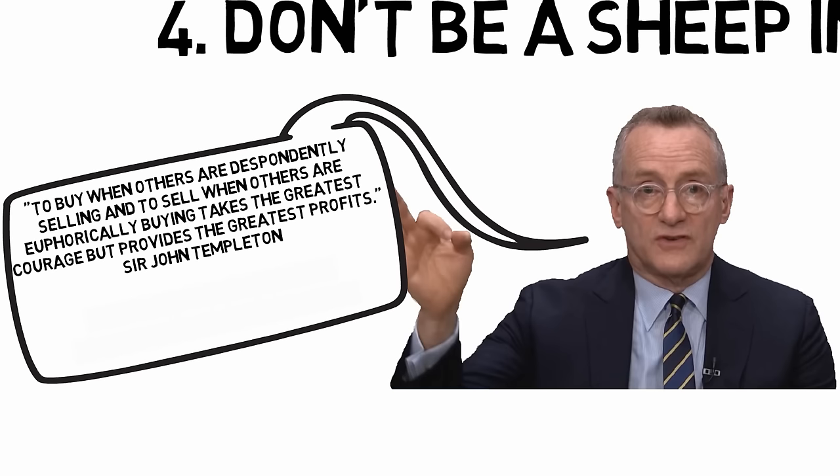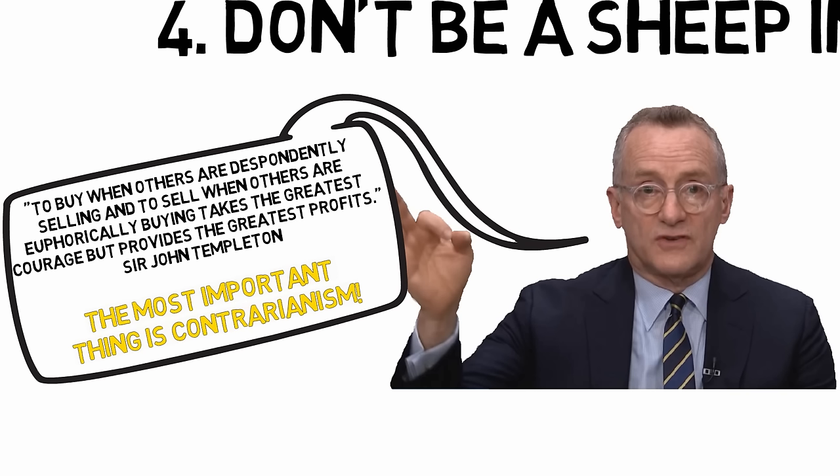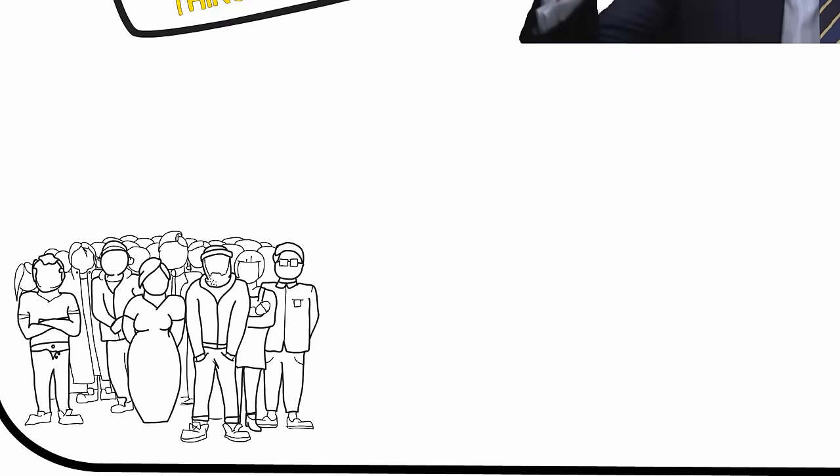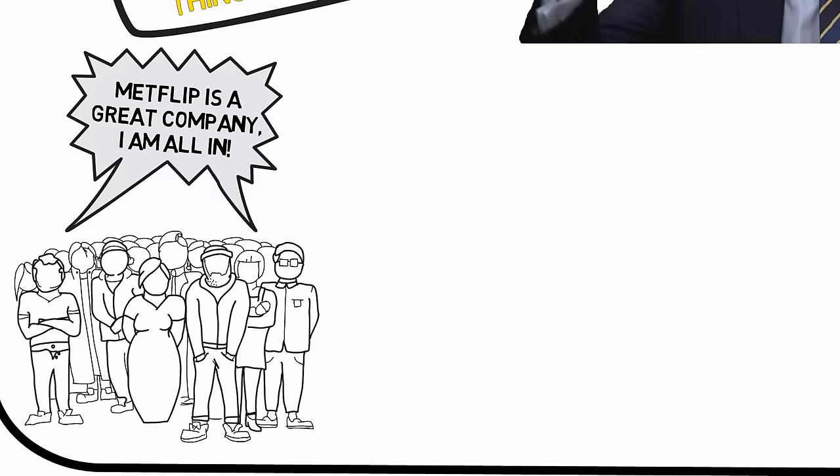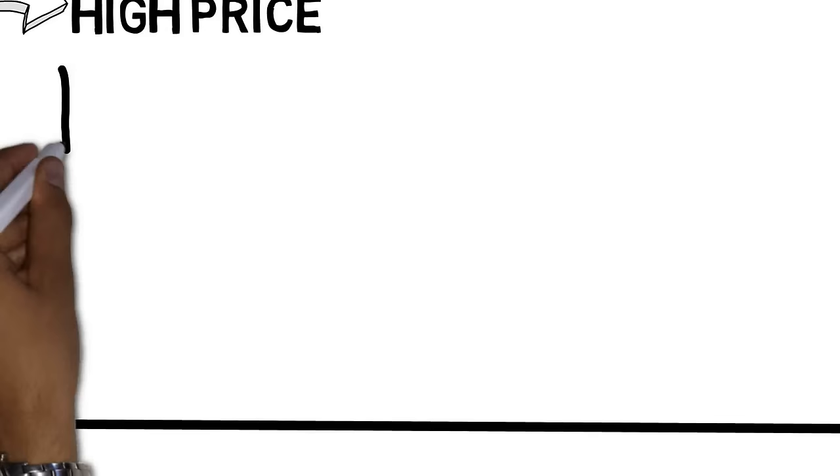While most investors just follow the current trend, the best investors a lot of time do just the opposite. When there's a broad consensus among the investment community, it means that most investors have already acted, and the current price reflects those actions. If a lot of investors have bought a stock because current conditions are perceived as good, the price is then high.